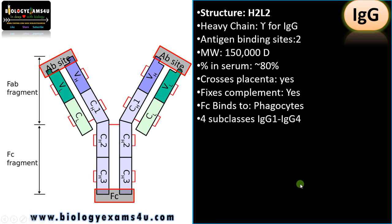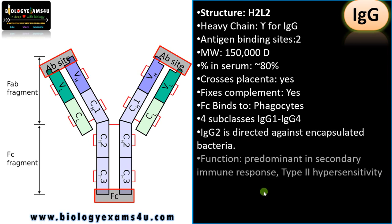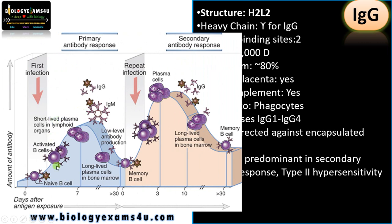There are four subclasses: IgG1 to IgG4. IgG2 is directed against encapsulated bacteria. IgG is the predominant antibody in the secondary immune response along with IgM. It mediates type 2 hypersensitivity. IgM is the first antibody formed as a result of the immune response, then comes IgG, whose concentration gradually increases during the secondary immune response.